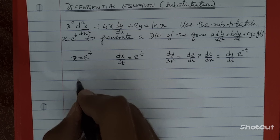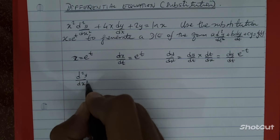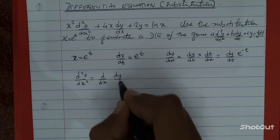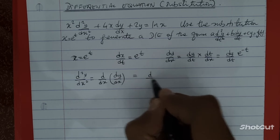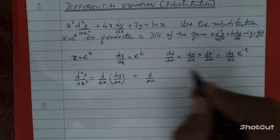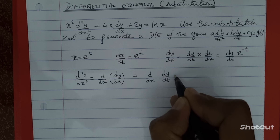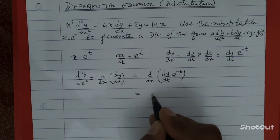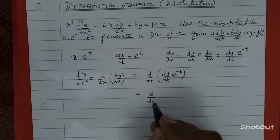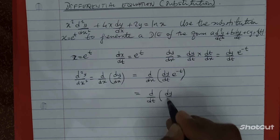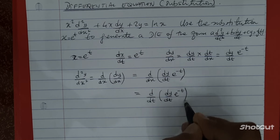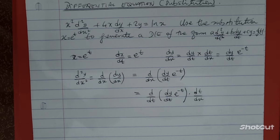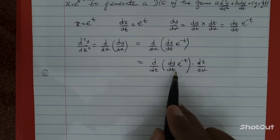Now we're going to find the second derivative, d²y/dx². We're differentiating with respect to x, so we differentiate dy/dx with respect to x. That gives us d/dx of dy/dx, which equals dy/dt times e to the minus t. To differentiate this with respect to x, we use the chain rule again: differentiate with respect to t and multiply by dt/dx.